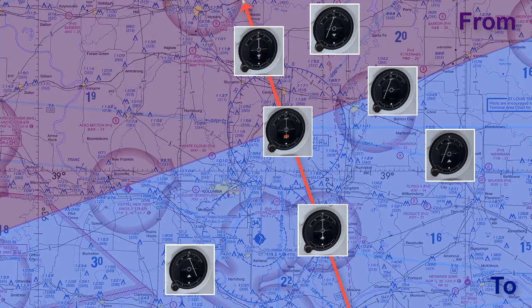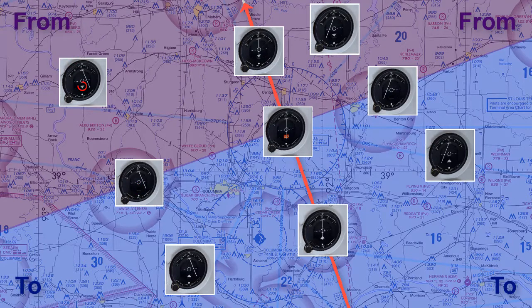If we are somewhere to the left of the course the CDI needle will be pointing to the right, and we will see TO in the TO quadrant, no flag if even with the VOR, or FROM in the FROM quadrant. The other thing to keep in mind is no matter which way the plane is pointed in a given spot, the CDI needle will be the same in that spot.